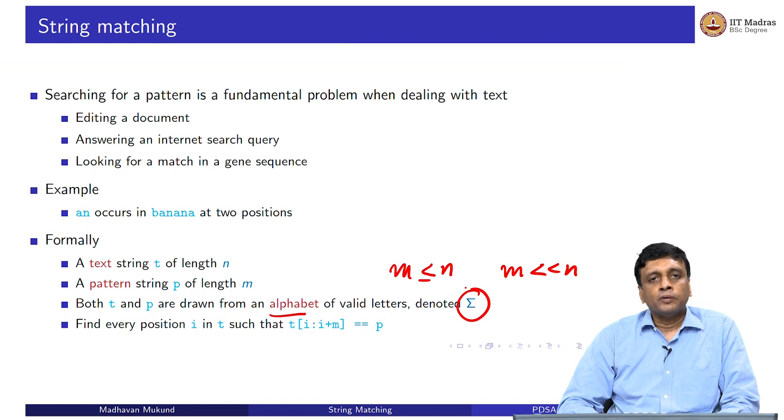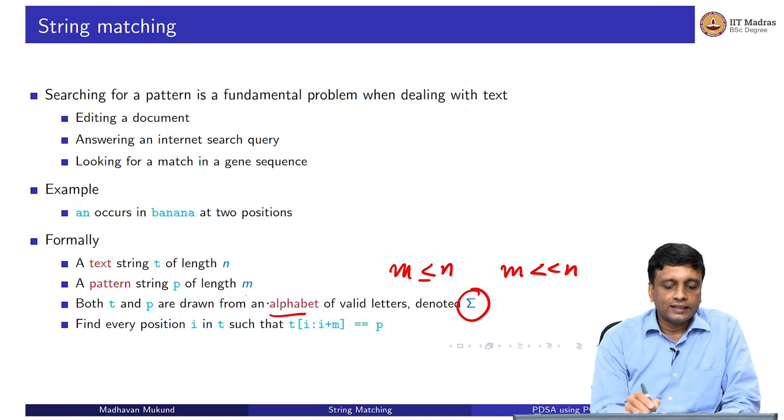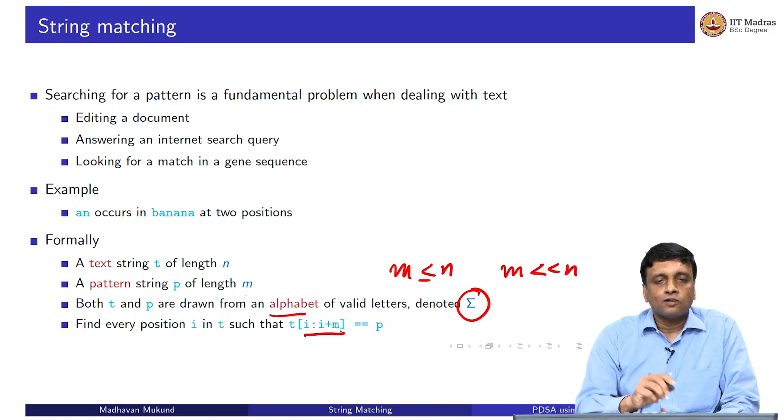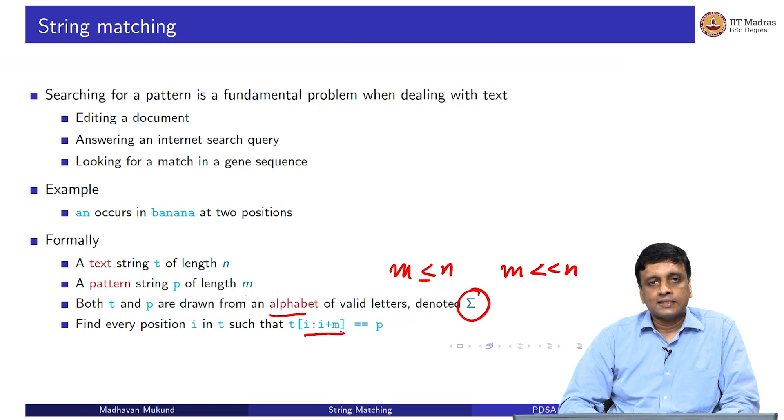The search problem that we are really interested in is to find every match. Since we assume that the pattern is of length m, we are looking at these slices of length m in our text. Start at a position i and go up to i plus m minus 1. That is a slice i colon i plus m. We want to check which all slices of this form match p and we would like to report every such i.